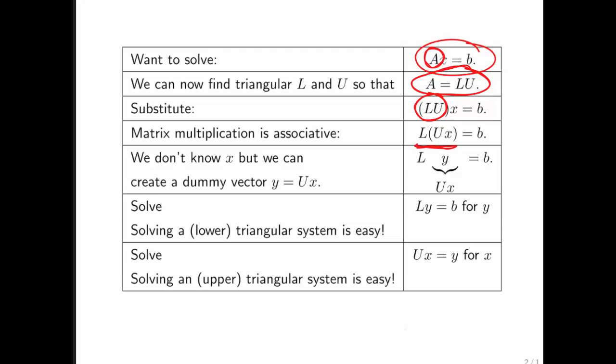We place our parentheses differently. We recognize that we can view U times x as some vector y. We don't know what vector y is, but now we get the constraint that L times y has to be equal to b.